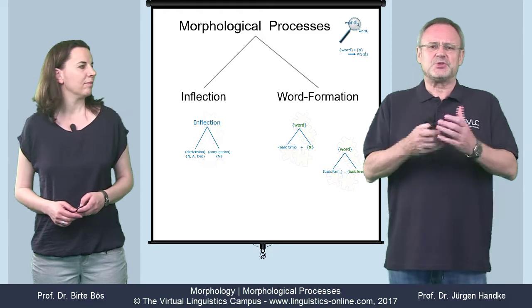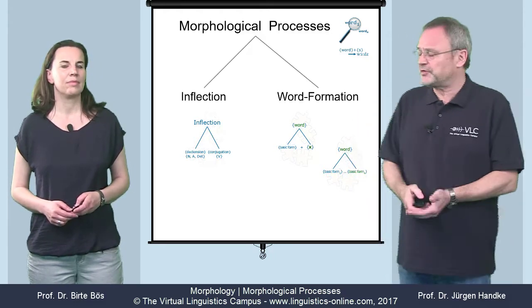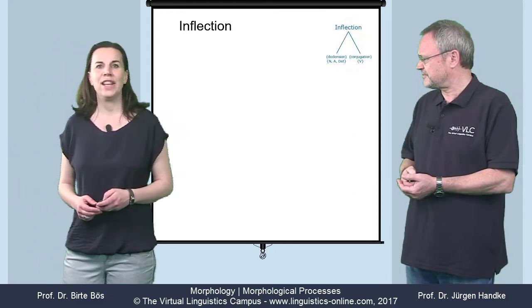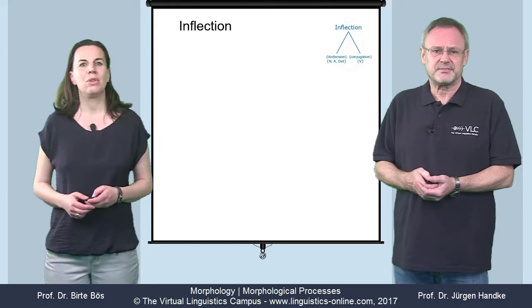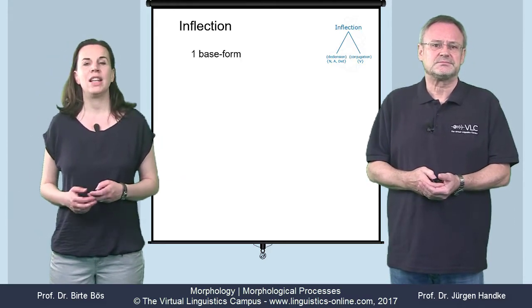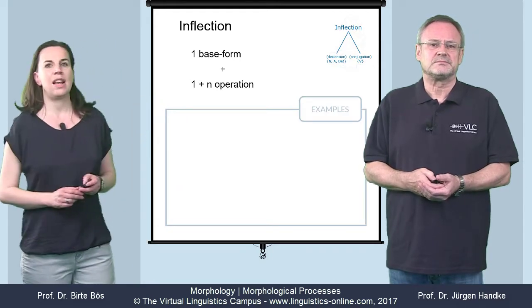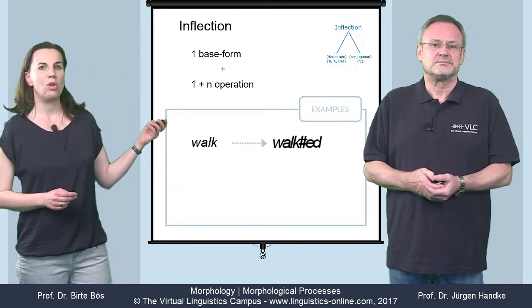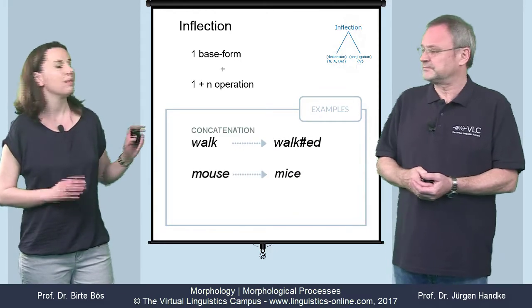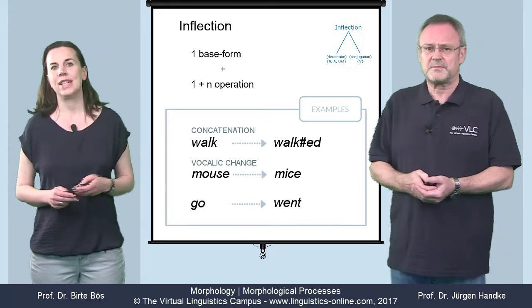Let us look at the main formal differences between inflection and word formation first. Let's look at inflection. This process involves one base form, also referred to as free morph, and at least one morphological operation. Here are three examples: walk/walked — that's concatenation; mouse/mice — that's vocalic change; and go/went — that's suppletion.